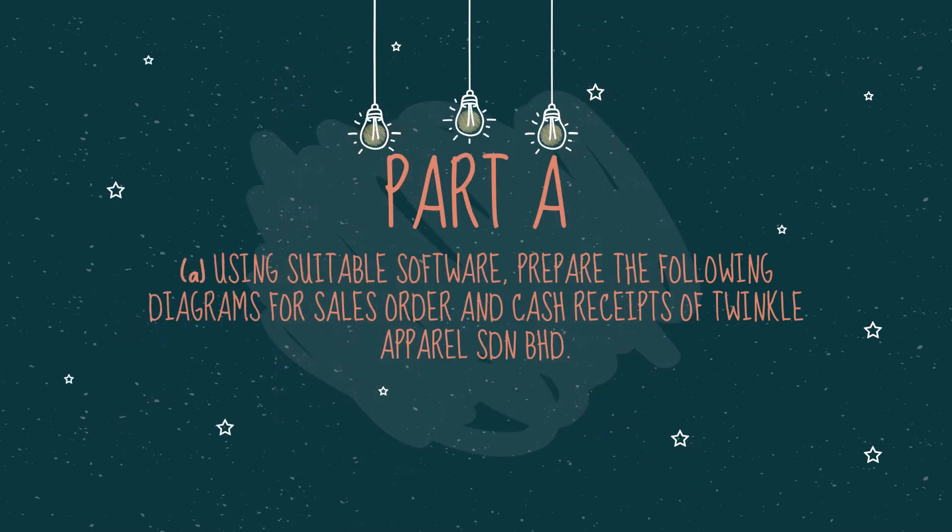My name is Nur Fatin Izzati Binti Ahmad Faiz, Metric No. 273067. For Part A, I'm going to present a table of entities and activities and context diagram for question A. I'm also presenting for question B about the strength of internal control procedures.